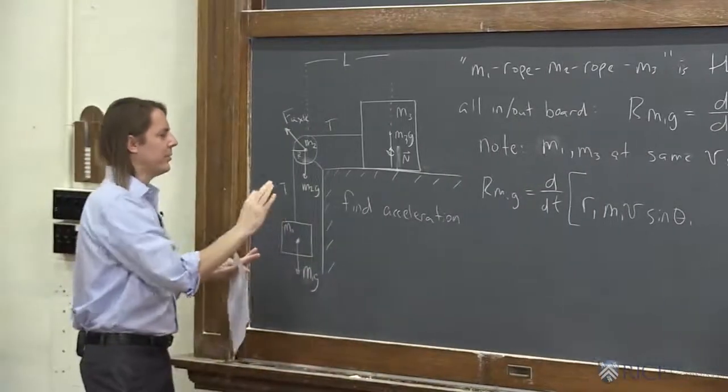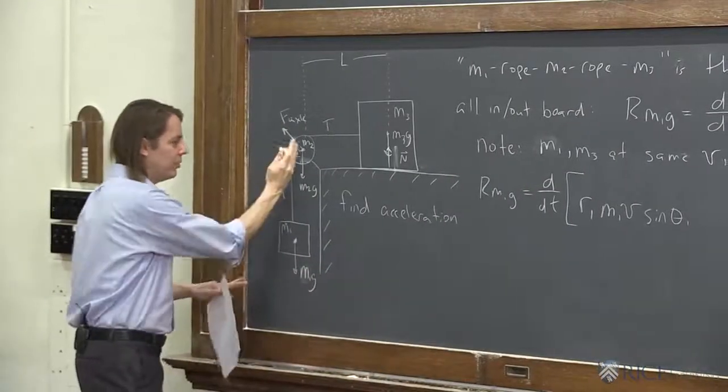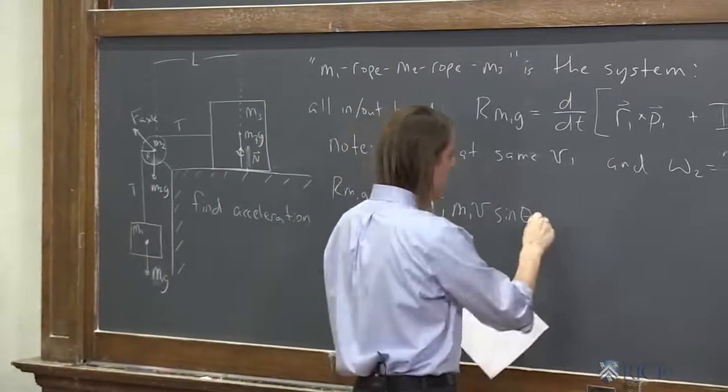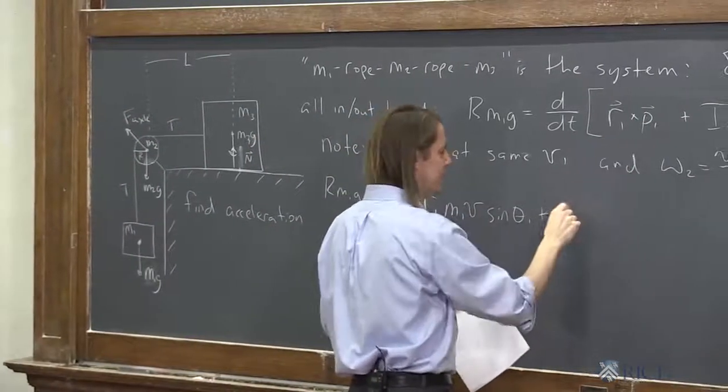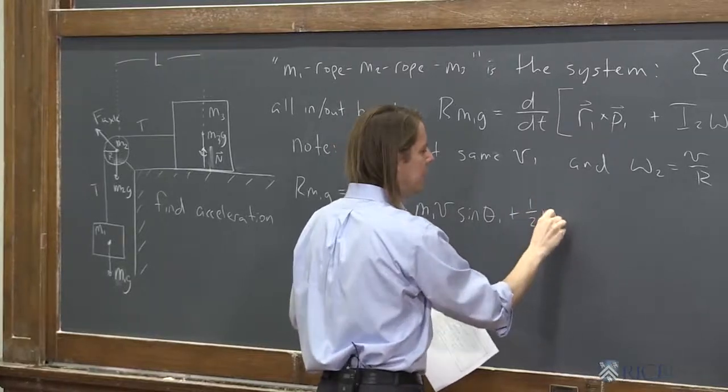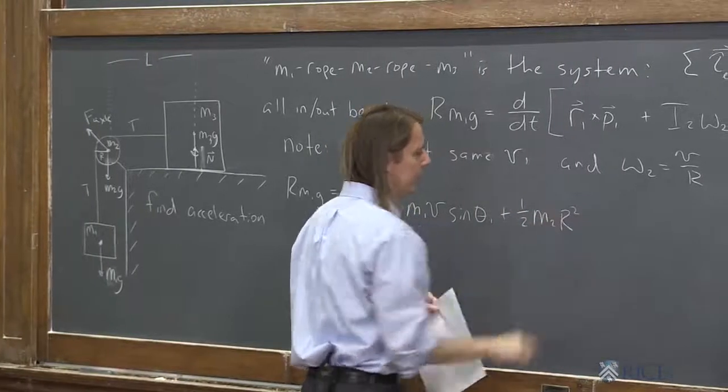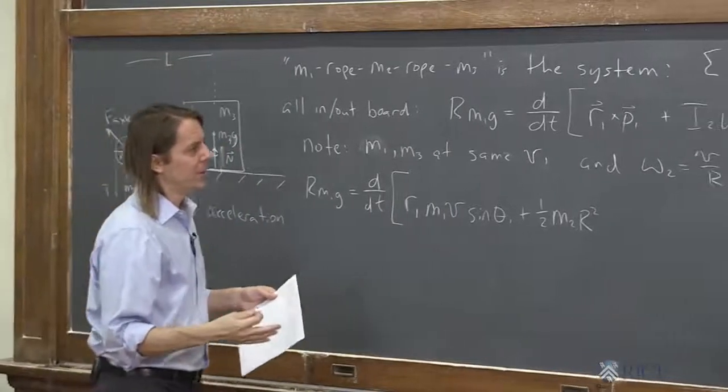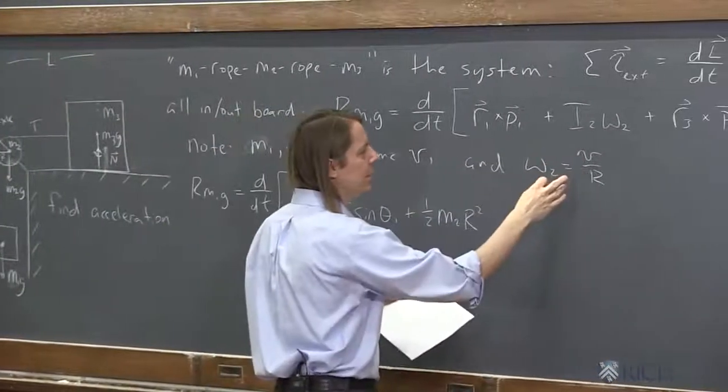I'm not going to draw all the vectors like we did for the torque, but that's this angle we would stick right here, theta 1. Plus, let's think about what is I of the disk. It's 1 half M2 big R squared. 1 half MR squared is a disk's moment. And omega 2 is V over R.